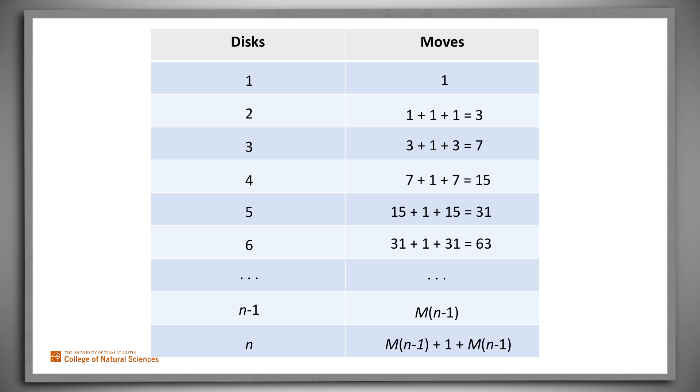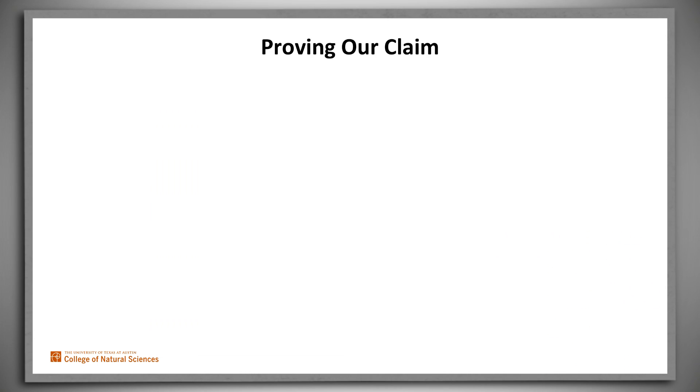Look at this chart. It appears that to move n disks requires 2 to the n minus 1 moves. But what can we actually prove? Our analysis of the algorithm tells us that the number of moves required for n disks is twice the number of moves for n minus 1 disks, plus one.